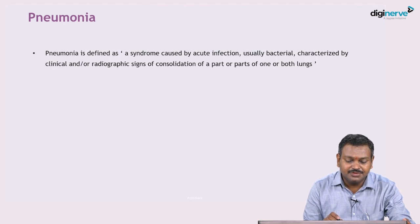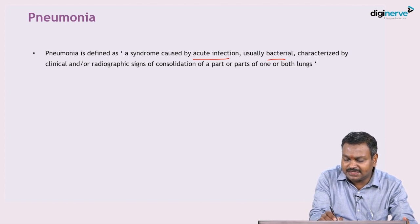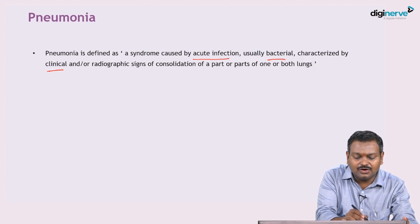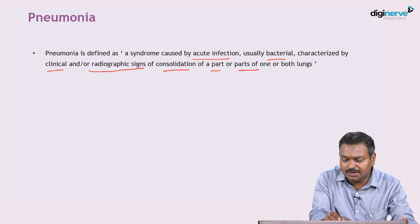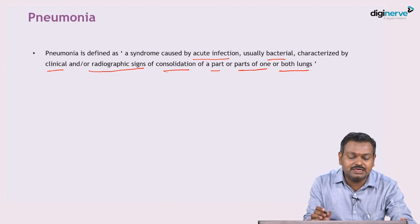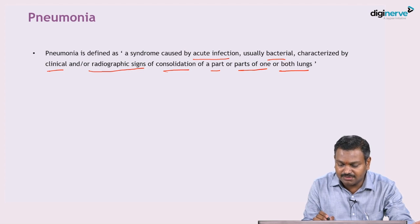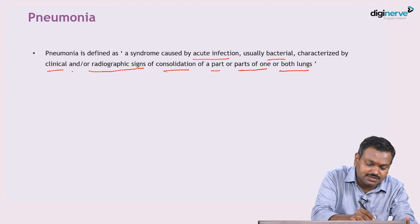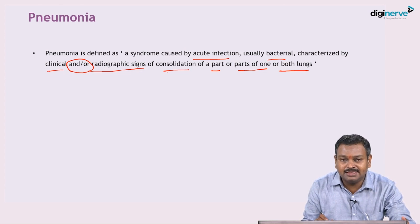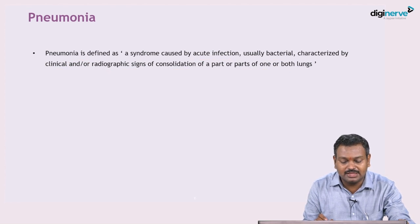Coming on to pneumonia — the definition: pneumonia is a syndrome caused by acute infection, usually bacterial, with clinical or radiographic signs of consolidation of either a part or parts of one or both lungs. It is an acute infection characterized by clinical and/or radiological evidence of consolidation; both need not be present — even one is sufficient.